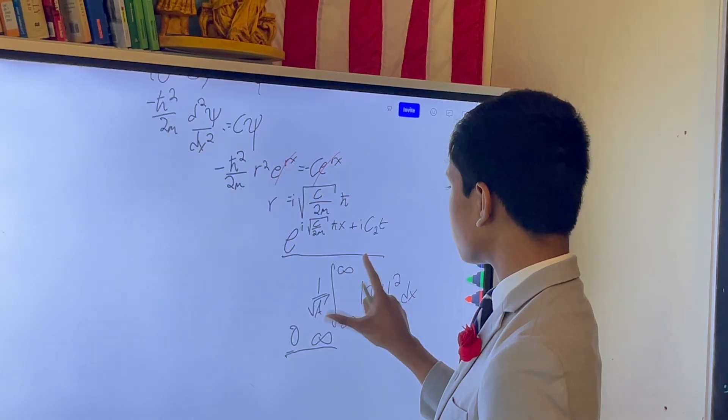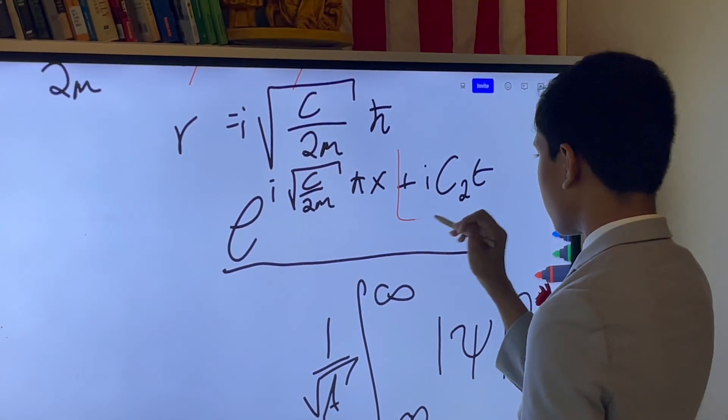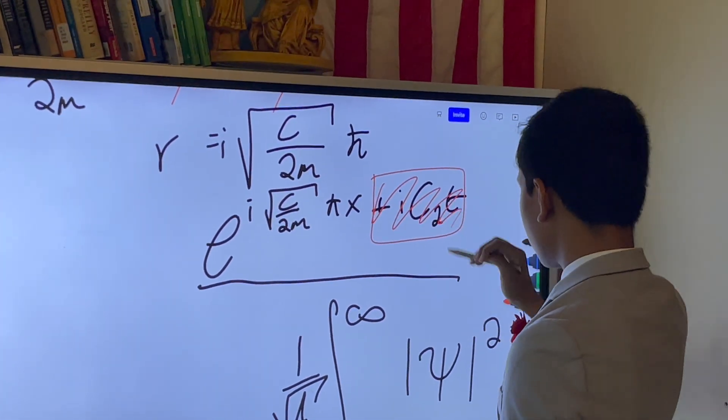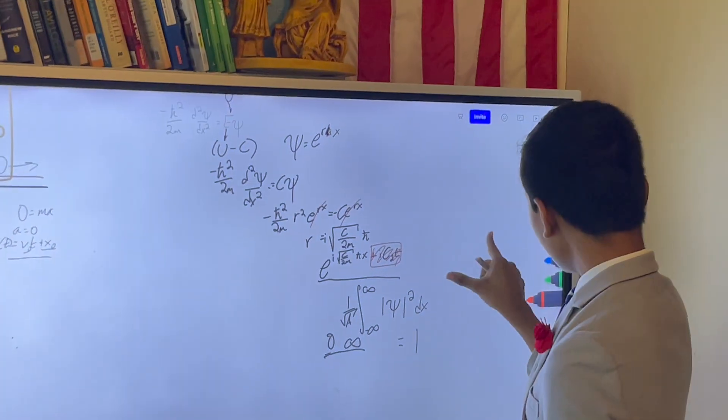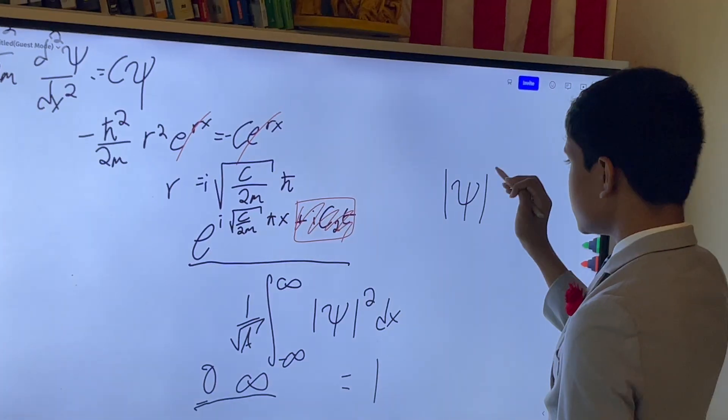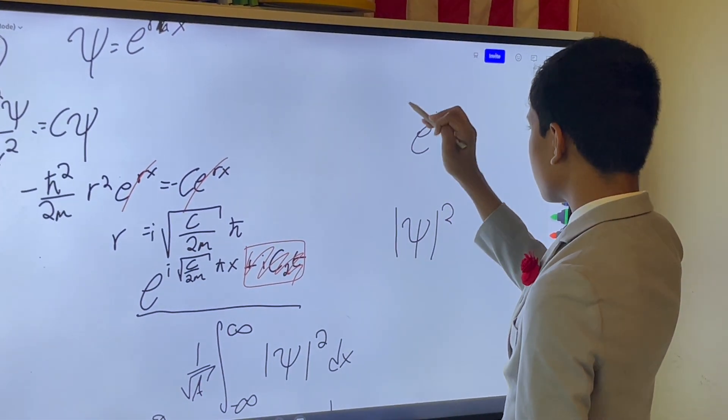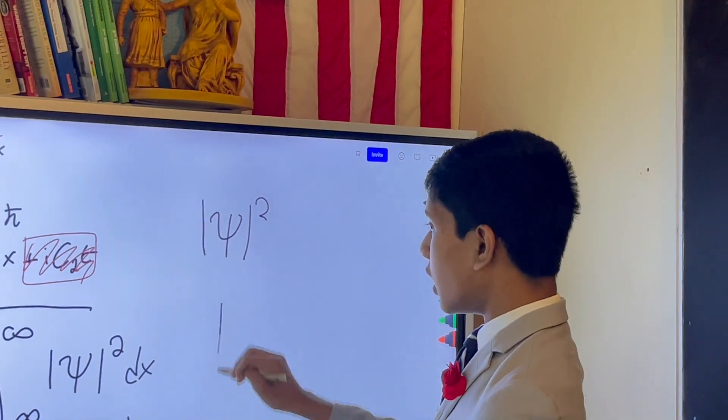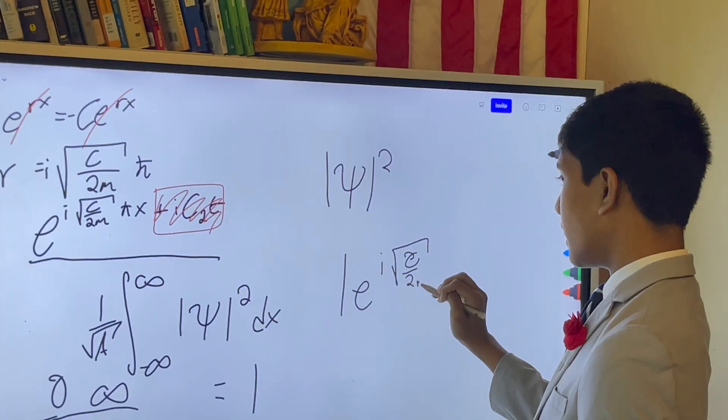So, what happens when we do this? Well, first, we ignore this part because we're not integrating over t, we're integrating over x. And then, how do you write the modulus of e to the i something squared? What's the modulus of e to the i square root of c over 2m h bar x?